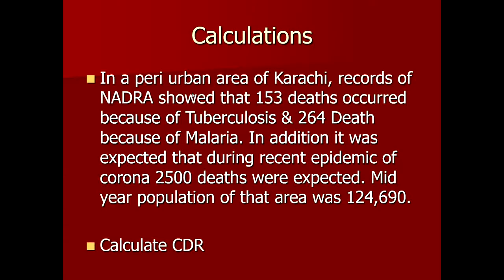Please calculate the crude death rate for a peri-urban area of Karachi. Records from NADRA show that 153 deaths occurred because of tuberculosis and 264 deaths because of malaria in that area. In addition, during the recent epidemic of COVID, 2,500 deaths are expected. The mid-year population of that area is 1,24,690. Please calculate the crude death rate of this area.